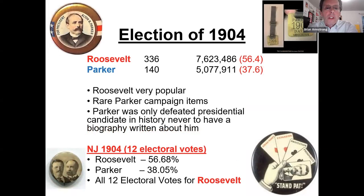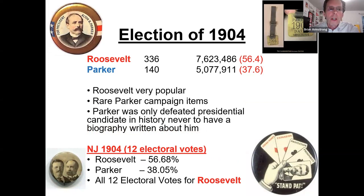Roosevelt ran for his own election in 1904 — a very popular president. He made a vow he always regretted: he'd consider the McKinley first term as his first term, and after winning in 1904 he would not run for a third term. Parker — the opposing candidate — his political items are very valuable because not many were made, since he was considered a losing candidate from the start given Roosevelt's huge popularity.